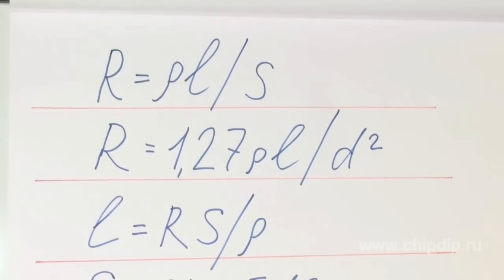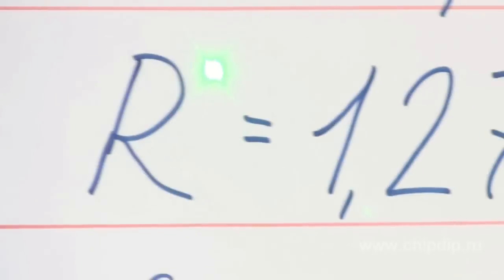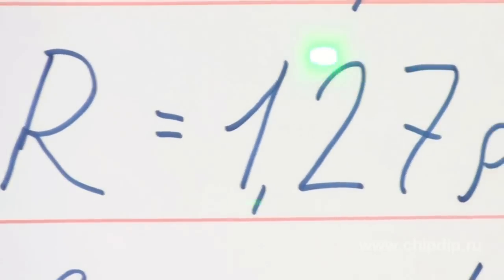You can calculate the cable resistance using the following formula: R equals PL divided by S, where P is a specified resistance, L is the cable length in meters, and S is the cable cross-section area in square millimeters.